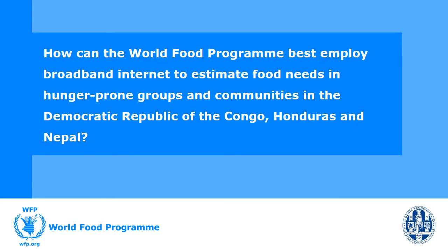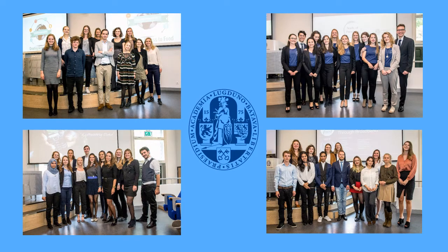With this in mind, we challenged some groups of students from Leiden University in the Netherlands to give us ideas about how to improve our data collection. We set them the following question: How can the World Food Programme best employ broadband internet to estimate food needs in hunger-prone groups and communities in the Democratic Republic of the Congo, Honduras, and Nepal? The teams studied these three contexts and produced in-depth reports and short summary presentations. They produced some really promising and diverse responses, so we wanted to share them with you.